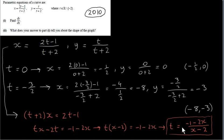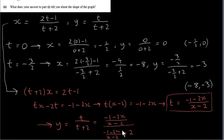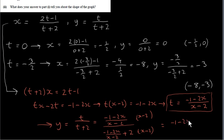Now plug this expression for t into the y equation to get y in terms of x. Replacing t with (−1 − 2x)/(x − 2) and then multiplying above and below by x − 2 clears the compound fractions. On the top we get −1 − 2x, and multiplying (x − 2) by +2 gives +2x − 4. The 2x terms cancel, leaving −1 − 2x in the numerator.